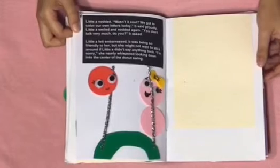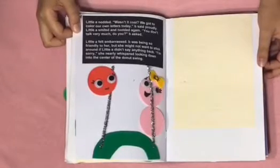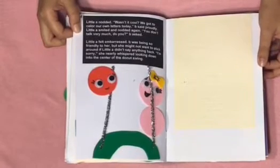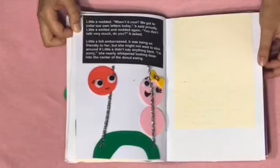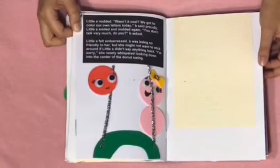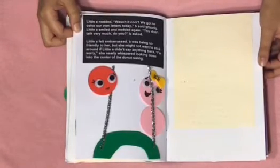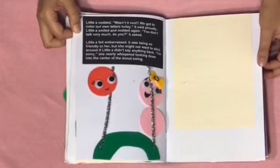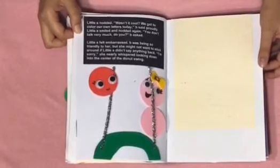Little A nodded. Wasn't it cool? We got to color our own letters today, B said proudly. Little A smiled and nodded again. You don't talk very much, do you? B asked. Little A felt embarrassed. B was being so friendly to her, but she might not want to stick around if Little A didn't say anything back. I'm sorry, she nearly whispered, looking down into the center of the donut swing. Little A and Little B are smiling, sharing the donut swing together.